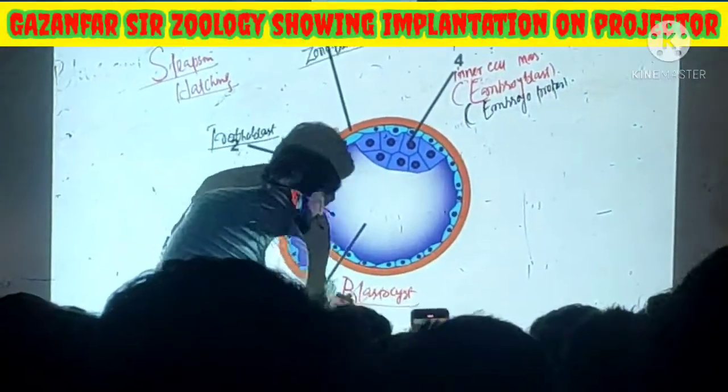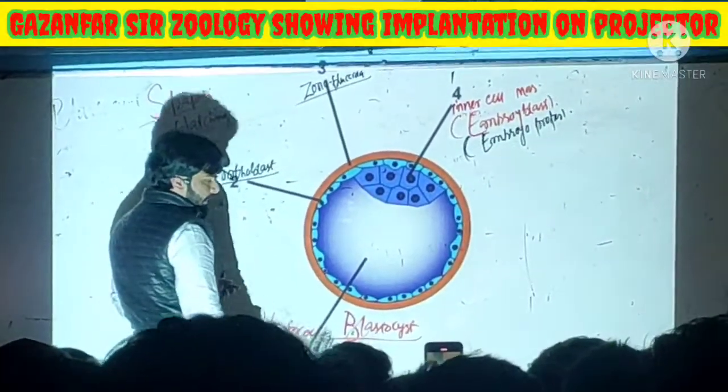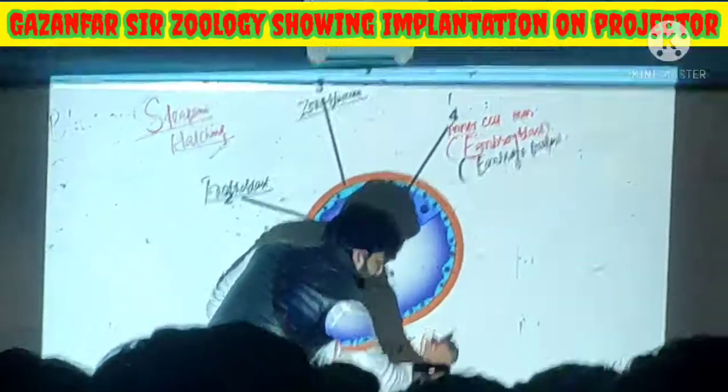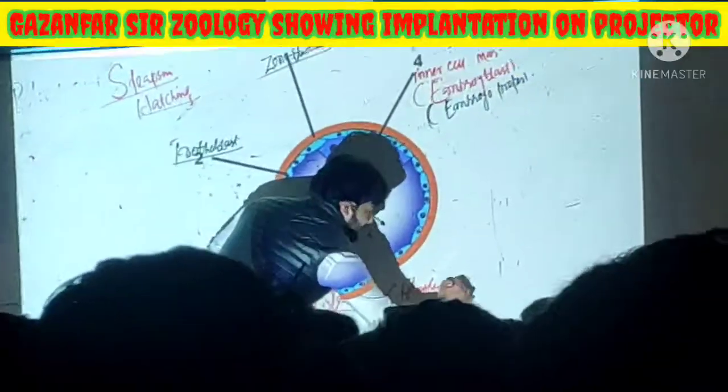This structure is called the blastocyst, and this process of its formation is called blastulation.